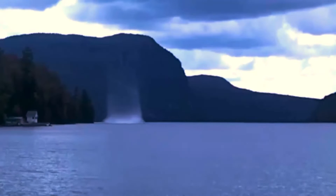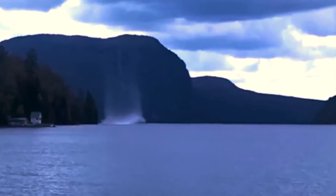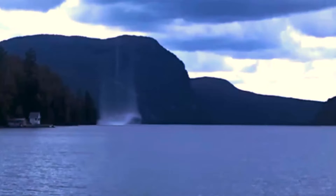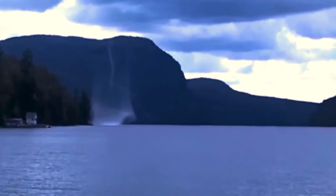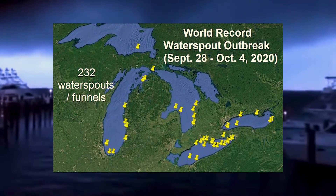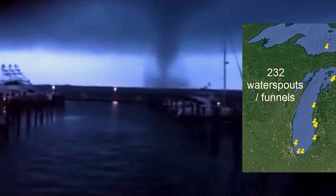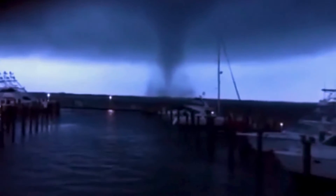Waterspouts can happen over seas, bays, and lakes worldwide. They are not restricted to saltwater. Many have been reported on lakes and rivers, including the Great Lakes and the St. Lawrence River. They are most common in late summer. In the northern hemisphere, September has been pinpointed as the prime month of formation.